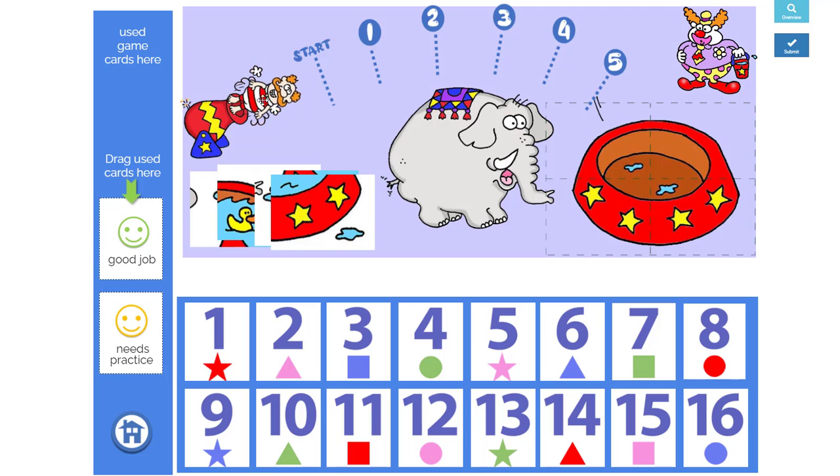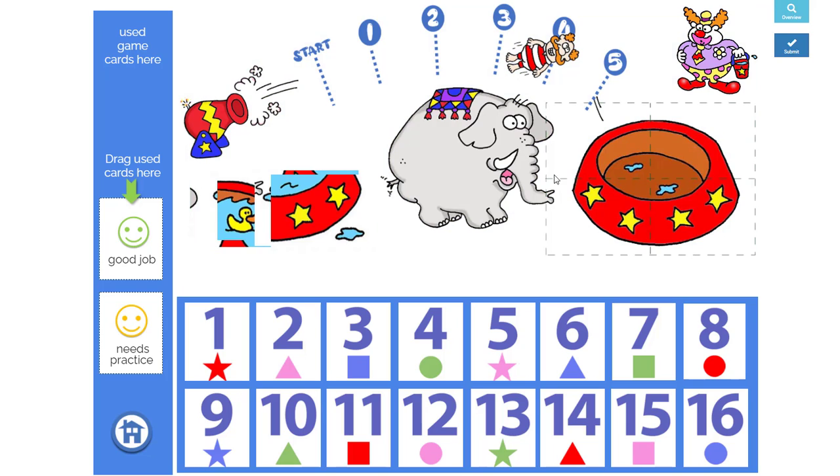This is Hugh, the human cannonball, and Kabowie. He's shooting himself over to the... Uh-oh, where's the water? Ah, the elephant was really thirsty. He ate a lot of peanuts today, so he's drunk all the water.